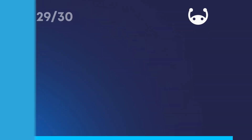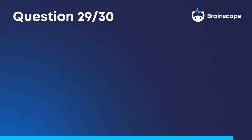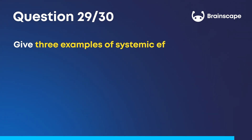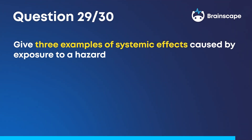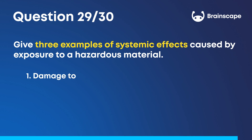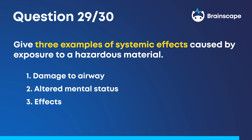Question 29. Give three examples of systemic effects caused by exposure to a hazardous material. One, damage to the airway. Two, an altered mental status. And three, effects to the heart.